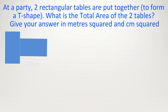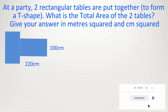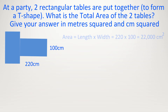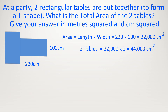At a party, two rectangular tables are put together to form a T-shape. What is the total area of the two tables? We see from this rectangle: 220 cm and 100 cm. What's the area? 220 times 100 equals 22,000 cm squared. But there's another one, so let's just double it: 44,000 cm squared.